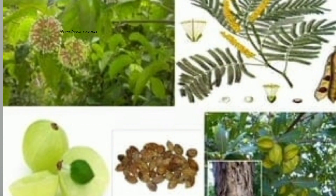The next type of secondary metabolites are tannins. They are carbon-containing compounds produced by plants and stored in different parts of the plant. They are usually brown in color. These tannins are useful for making leather and some medicines. Tannins are used in the preparation of leather and medicines, and we usually obtain tannins from cassia and acacia plants.